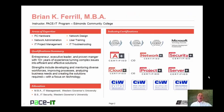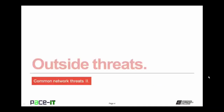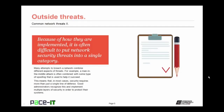Hello, I'm Brian Farrell, and welcome to PACE IT's session on Common Network Threats Part 2. Today I'm going to be talking about more outside threats and then some wireless network threats. Because of how they are implemented, it is often difficult to put network security threats into a single category — many attempts to breach a network combine different aspects of different threats. For example, a man-in-the-middle attack is often combined with some type of spoofing. Good administrators recognize this and implement multiple layers of security in order to harden and protect their systems.